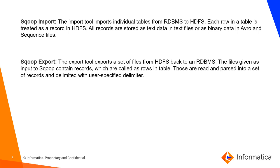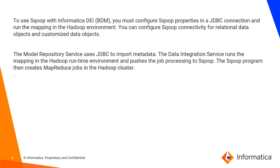For Sqoop export, the export tool exports a set of files from HDFS back to an RDBMS or SQL Server. The files given as input to Sqoop contain records — referred to as rows in the table — which are read and parsed into a set of records and delimited with user-specified delimiters.